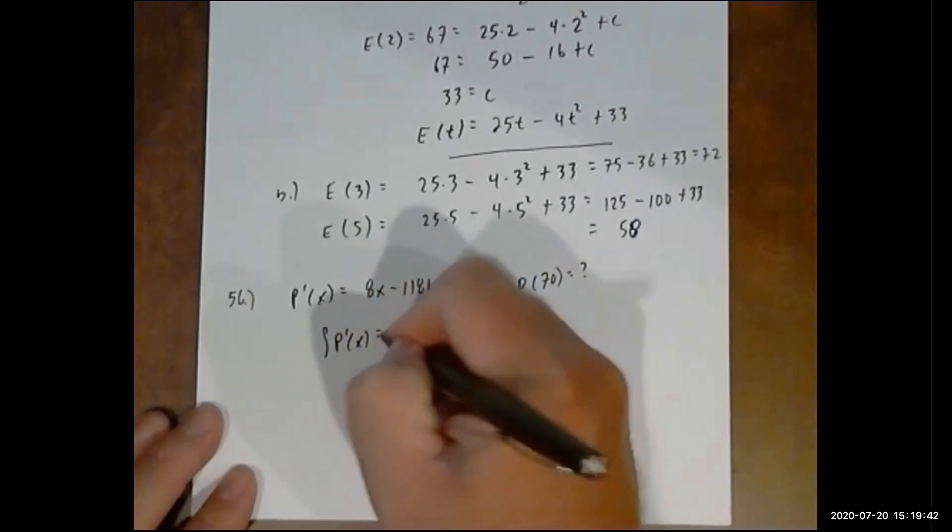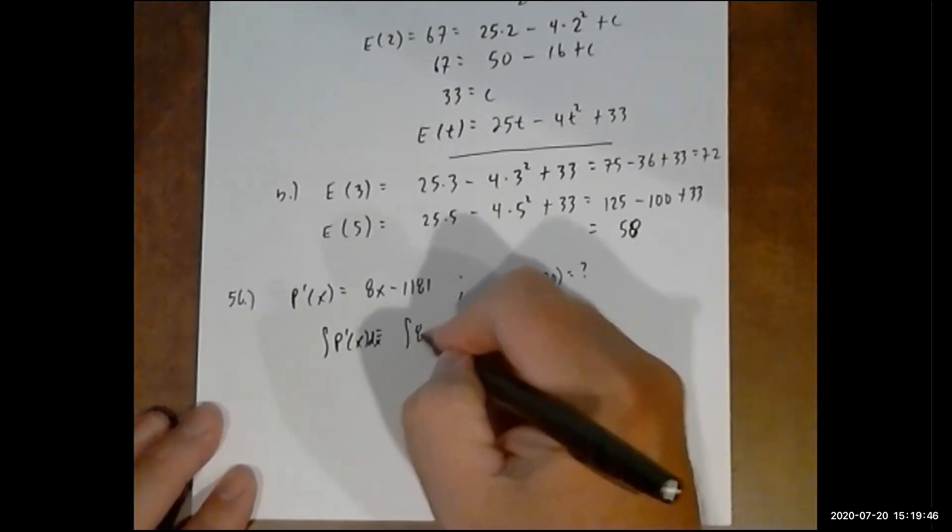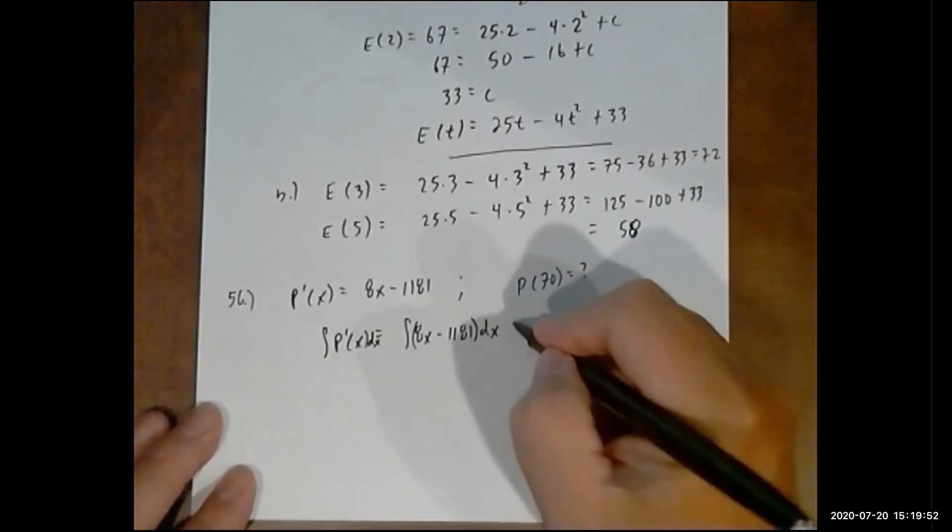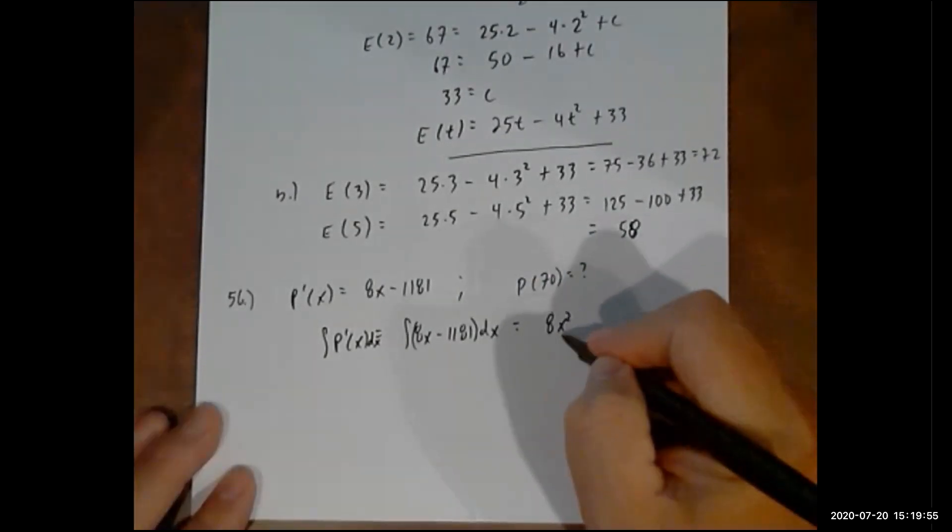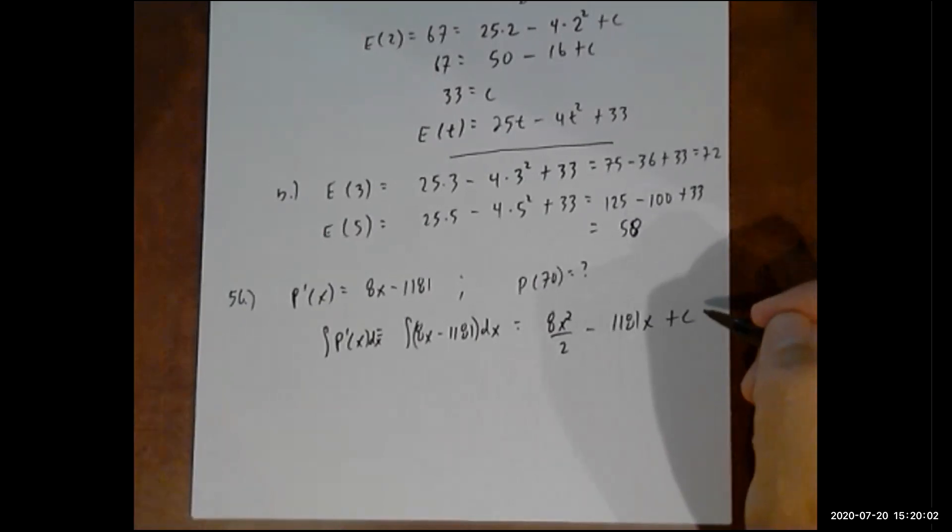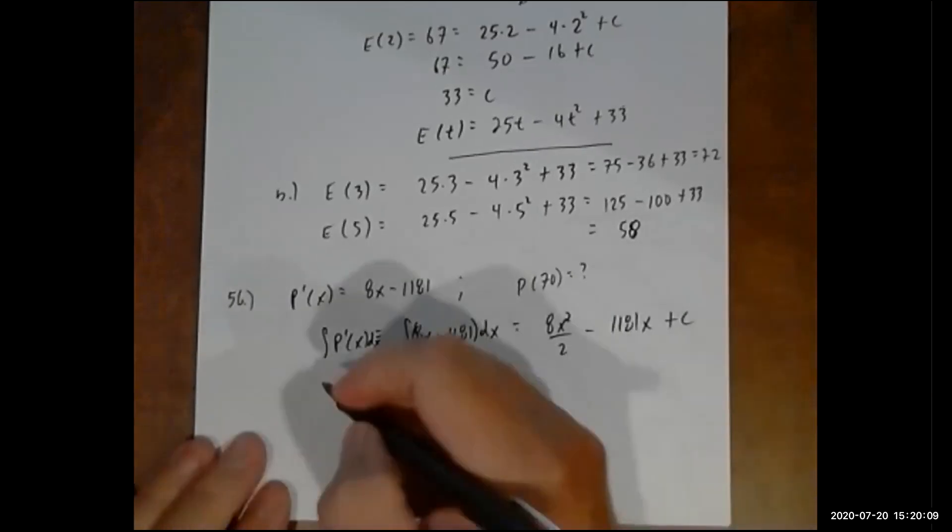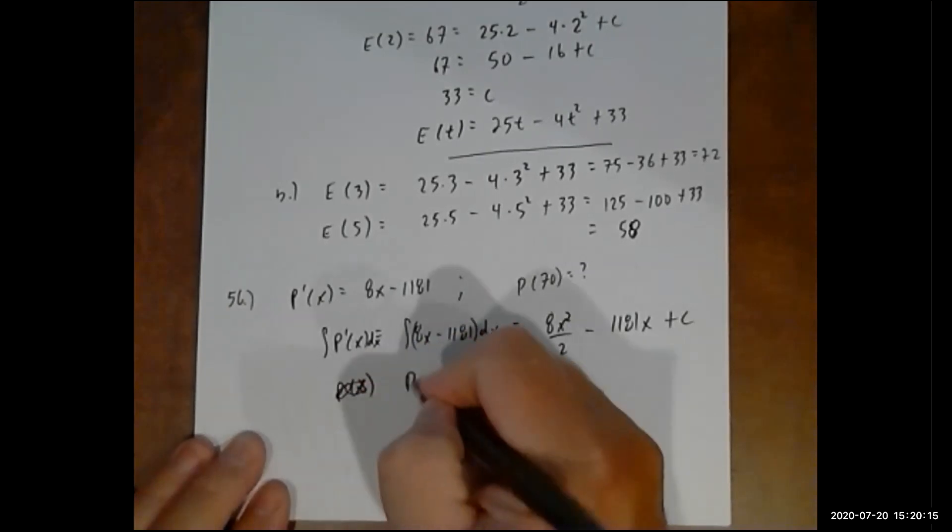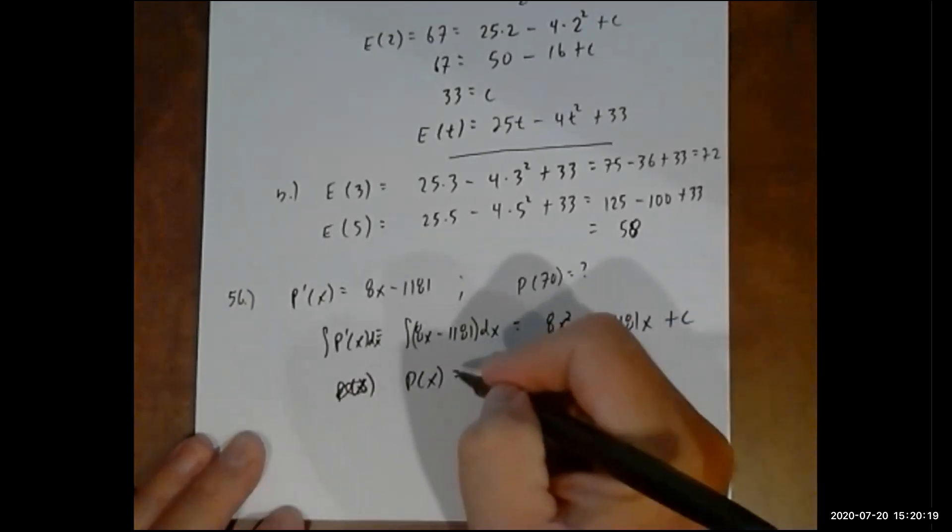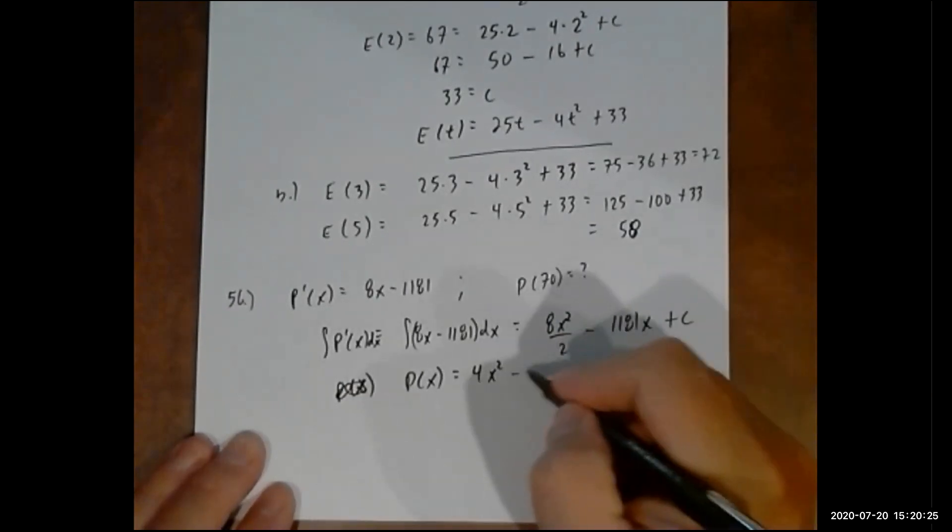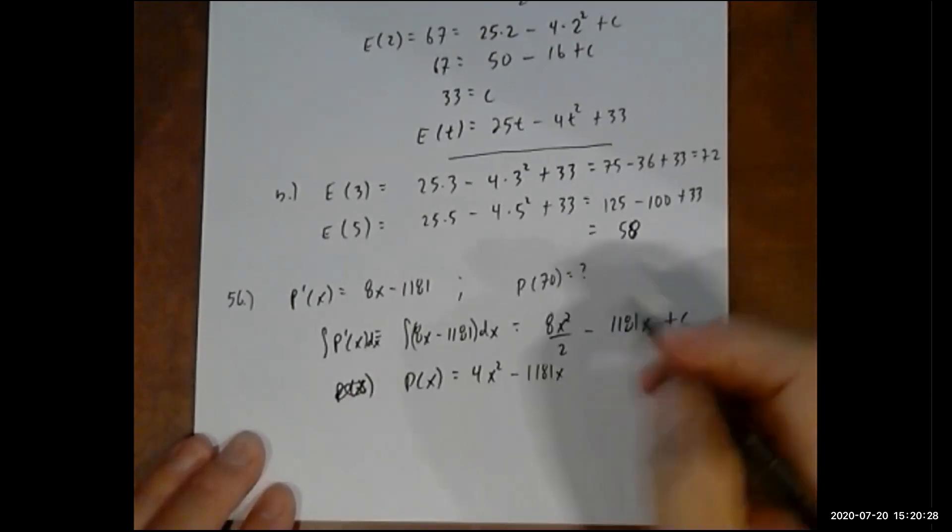It's going to be the integral of 8x minus 1181 with respect to x: 8x squared over 2 minus 1181x plus C. I'm assuming they're telling us that C is zero since there's no initial fixed cost. So P(x) equals 4x squared minus 1181x.